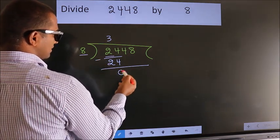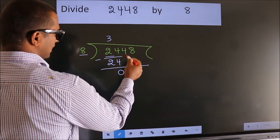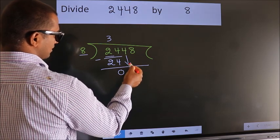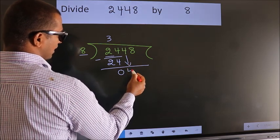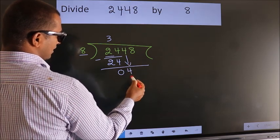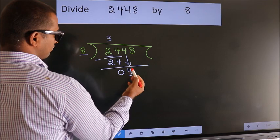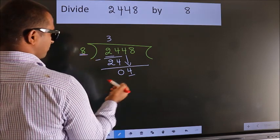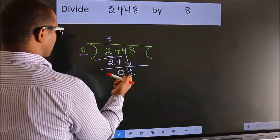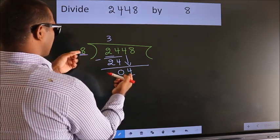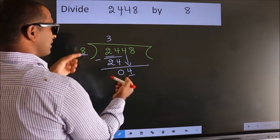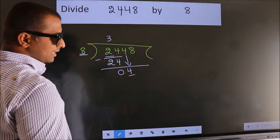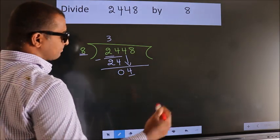After this, bring down the beside number. So, 4 comes down. Here we have 4, and here 8. 4 is smaller than 8, so we should bring down the second number.